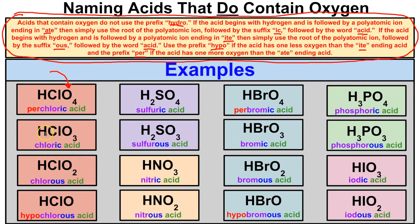For HClO3: it starts with hydrogen so it's an acid, it has oxygen so we do not use the prefix hydro. The polyatomic ion is chlorate — ending in -ate — so the -ate becomes -ic. We use the root of chlorate which is chlor, and we get chloric acid.